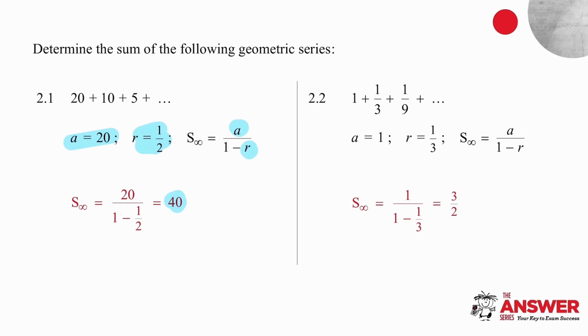In the second example, your ratio is going to be a third, your a value is 1. You substitute those values into the formula and you end up with 3 over 2.